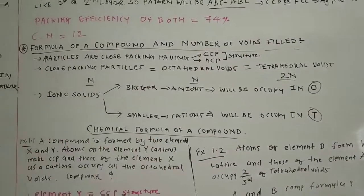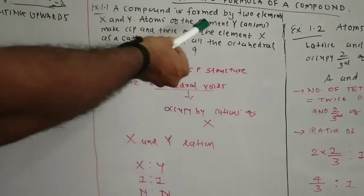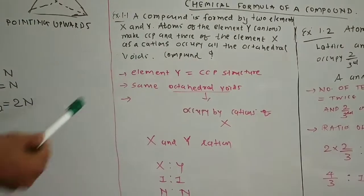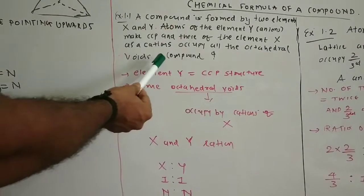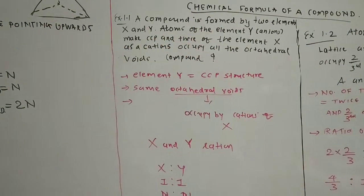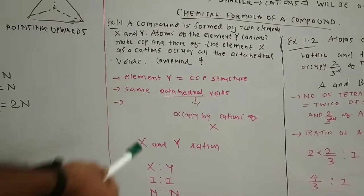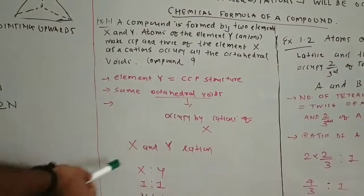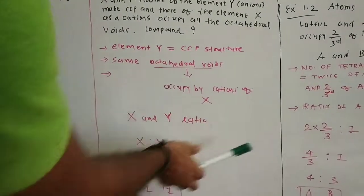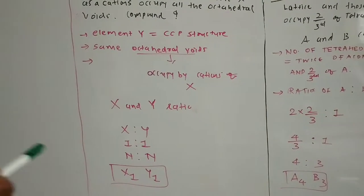Now let's calculate the chemical formula with two examples. The first: a compound is formed by two elements X and Y. Atoms of element Y, that is anions, make the CCP structure, and those of element X, that is cations, occupy all the octahedral voids. Since Y forms CCP, octahedral voids equal N, and X occupies all of them. So the ratio of X to Y is 1 to 1, giving the formula X₁Y₁ — that is XY.